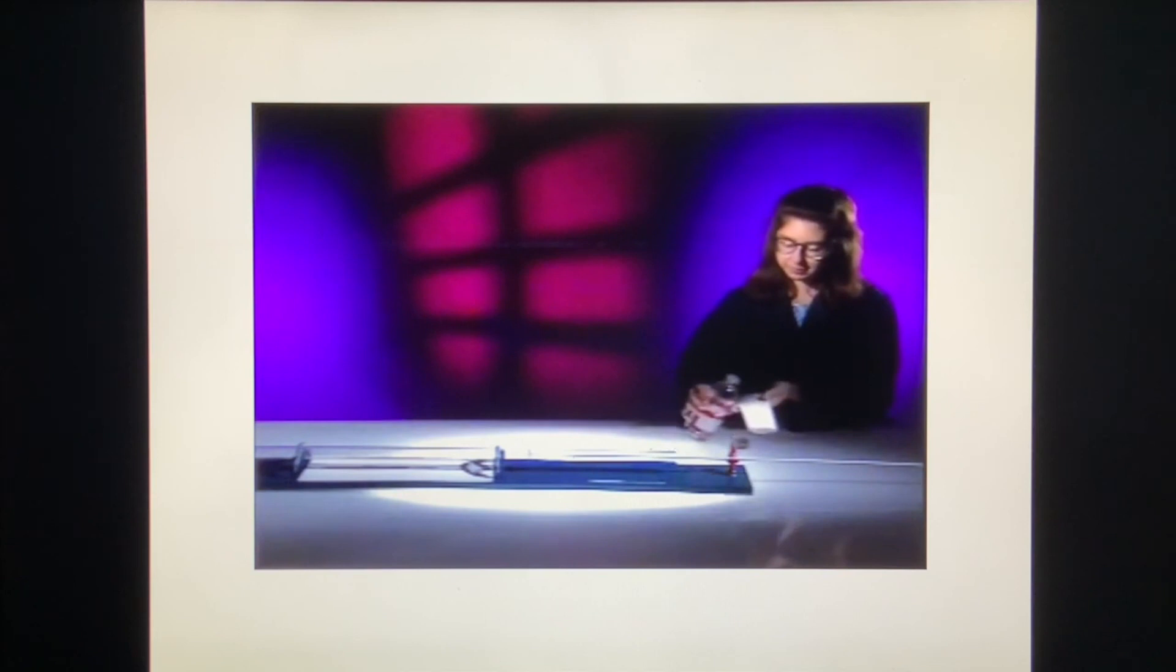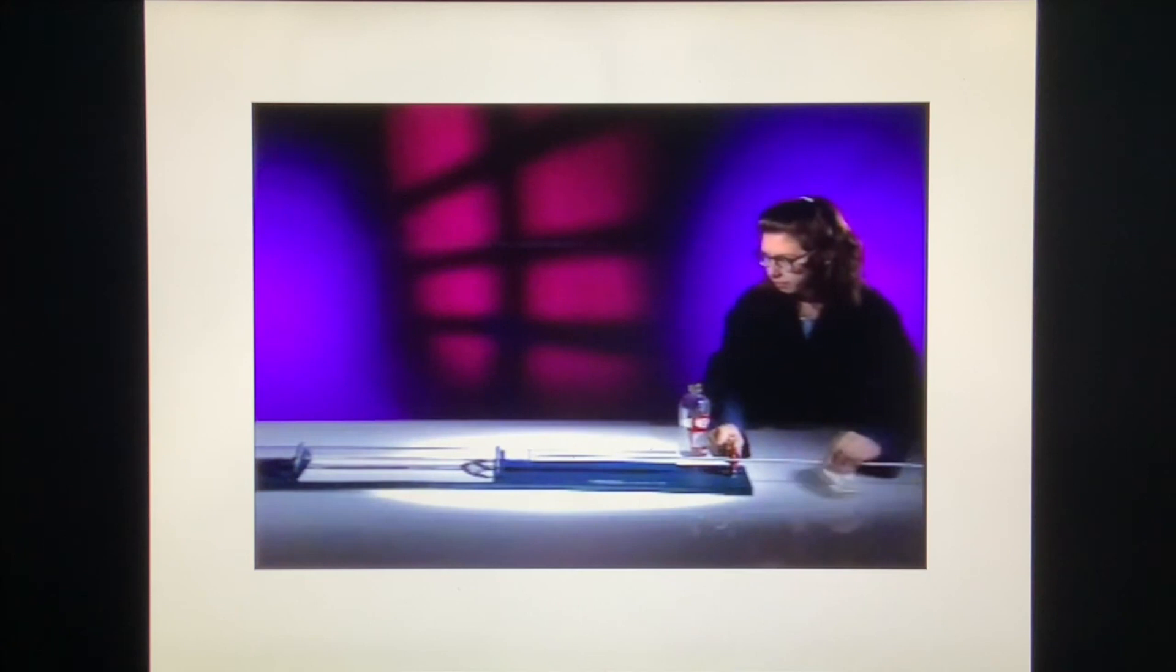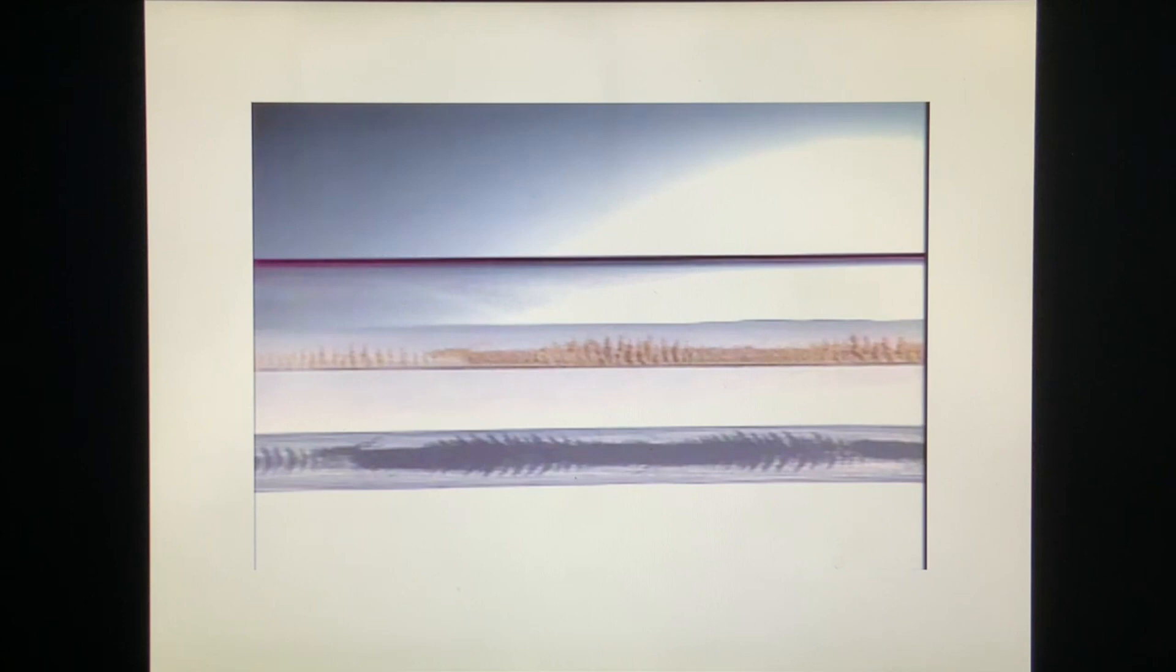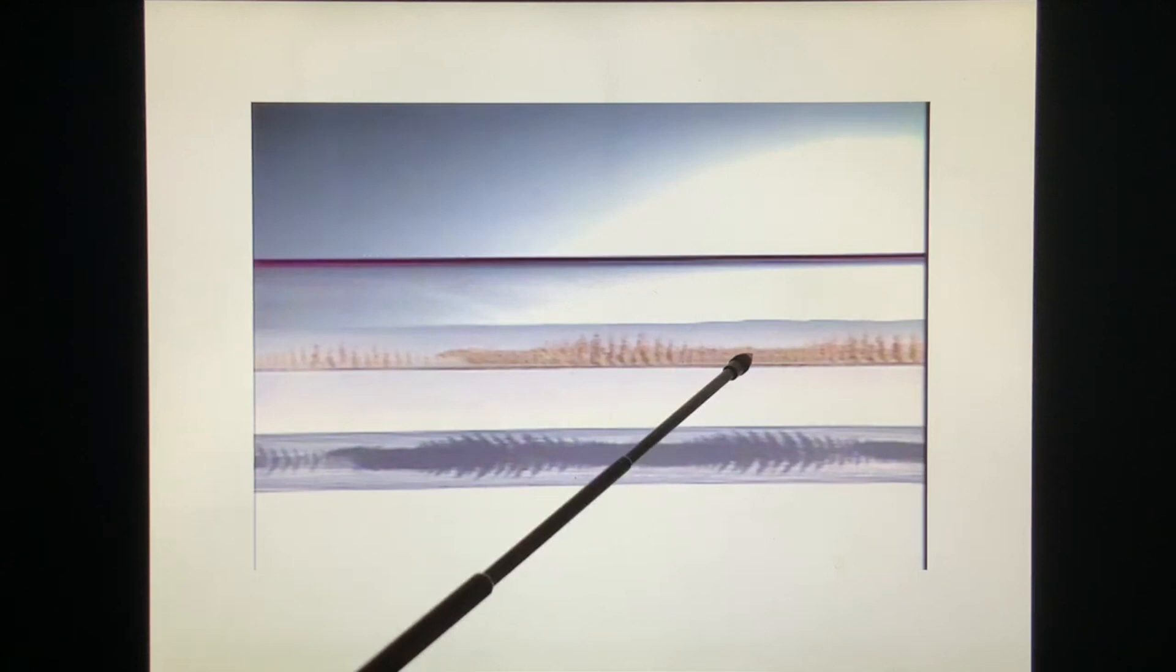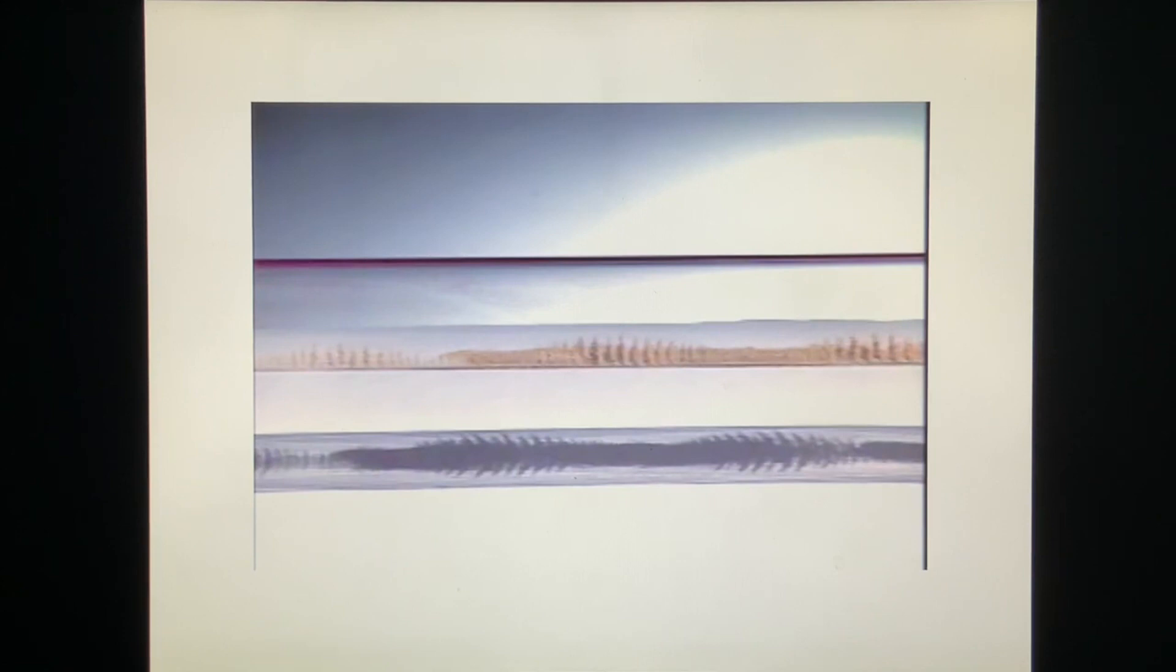We'll use this long glass tube and some cork dust to demonstrate standing sound waves in a column of air. The standing waves will be produced by driving the air in the tube with the output from this rod. When the standing wave forms, the motion of the air pushes the cork dust into regularly spaced piles. This is a node. This is an antinode. This is a node.